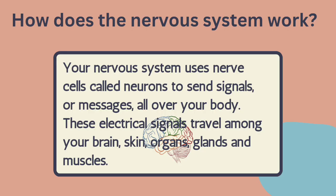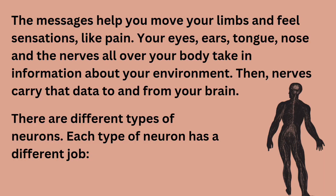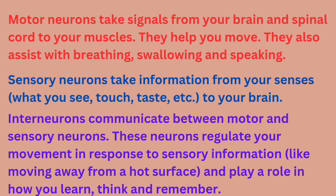Your nervous system uses nerves called neurons to send and receive messages. It sends messages in the form of electrical signals. The messages help you move your limbs and feel sensations. There are different types of neurons that perform different functions. Motor neurons help in taking action. Sensory neurons take messages from the senses. And interneurons help in developing communication between motor and sensory neurons.